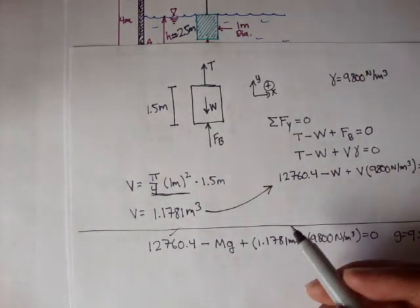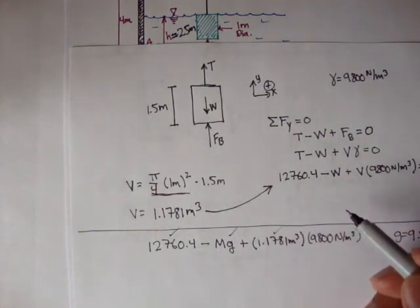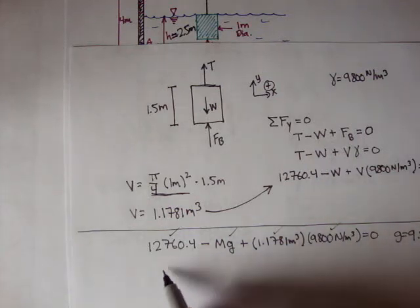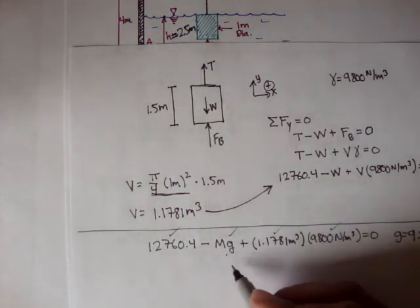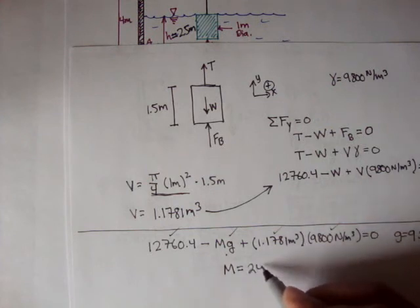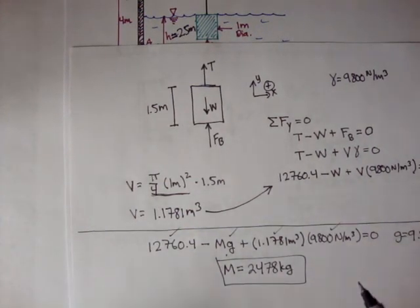So we know the tension, we know the gravity, we know the volume, we know the specific weight of water, and all that's equal to 0. We plug in gravity, we solve for m, and we get the mass is about 2478 kilograms. So the mass is about 2,480 kilograms, and that's the mass of the block.